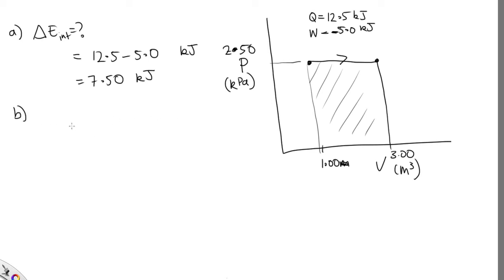Part B asks us to calculate the final temperature. And we're told that the initial temperature here is equal to 300 kelvins. Now we know that this is an ideal gas.